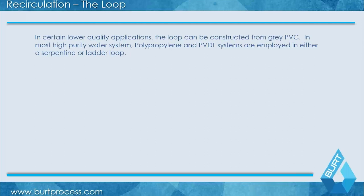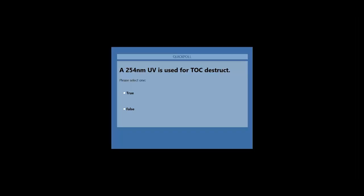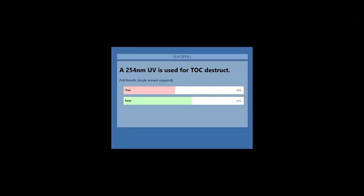Poll question: 254 nanometer UV is used for TOC destruction — true or false? The answer is false. 254 nanometer does not have the proper wavelength for TOC reduction. The two primary means of reducing TOC are your RO and your 185 nanometer UV light, which operates in the UV vacuum range to break down TOC.